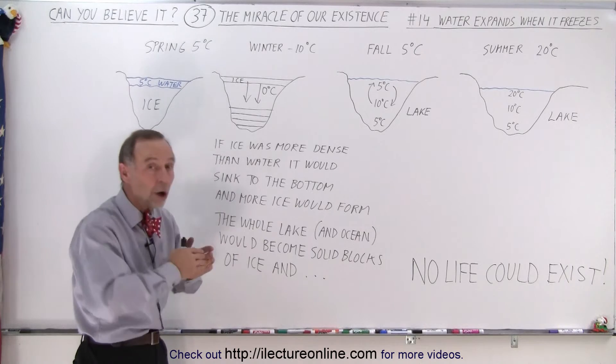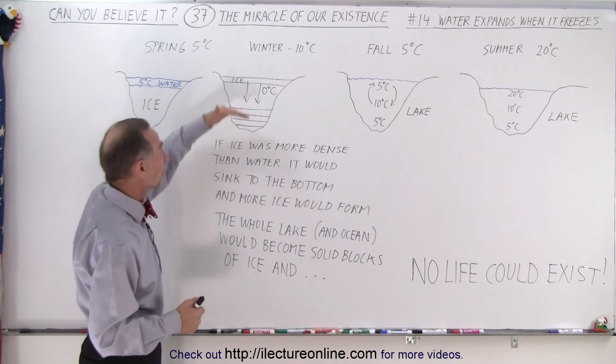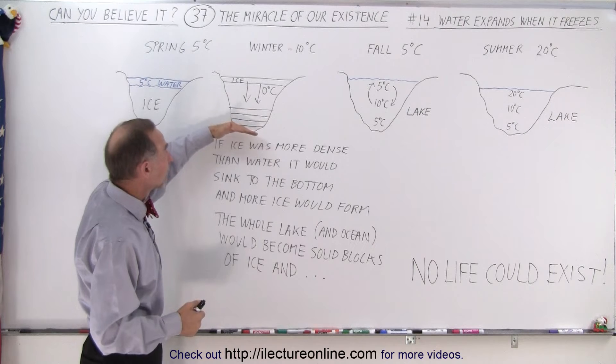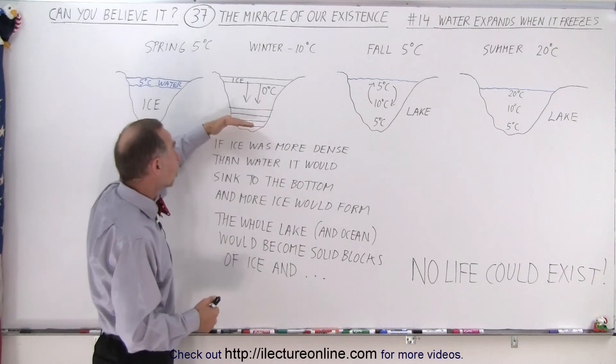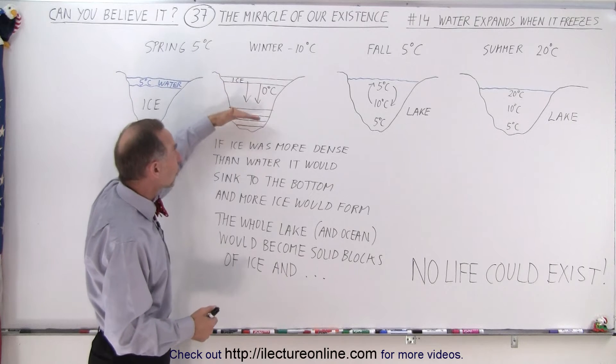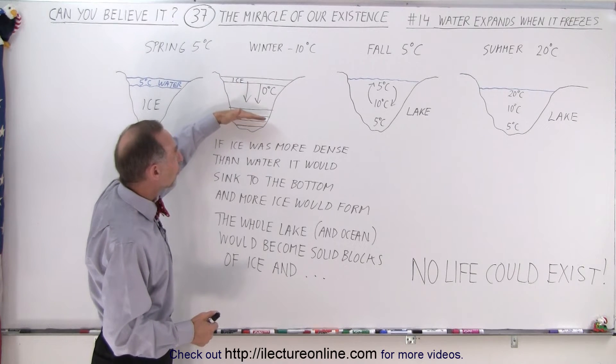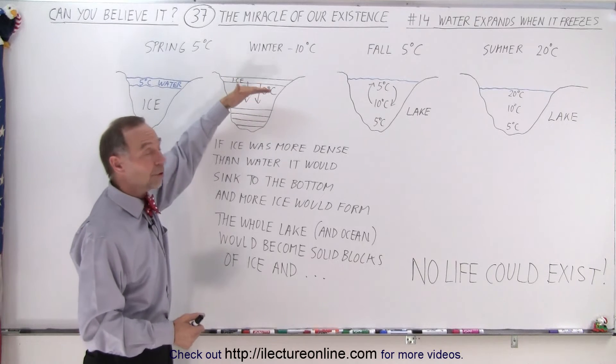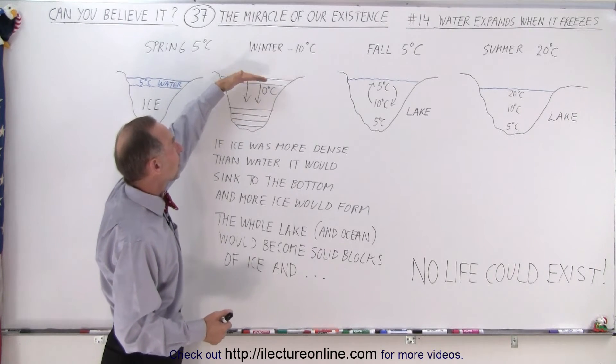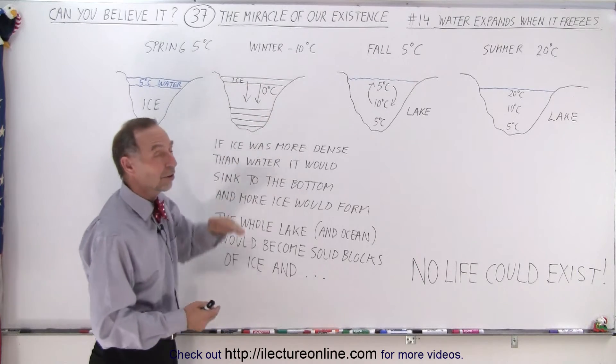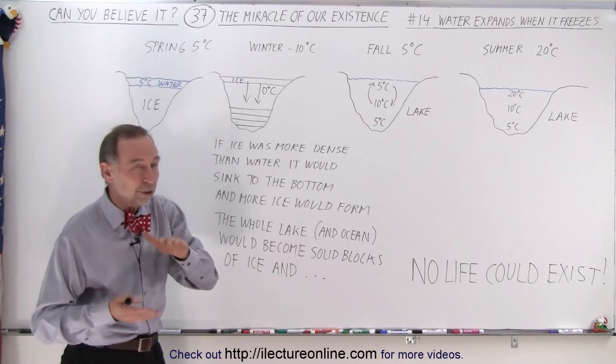What if water was just like all the other substances in the universe? It would simply become more dense and sink to the bottom. And as ice sinks to the bottom, more ice would form and sink to the bottom, and slowly but surely the whole lake would fill with ice as the heavier more dense ice would sink to the bottom and replace the water, pushing that to the top. It would freeze and just continue this process until the whole lake was filled with ice.